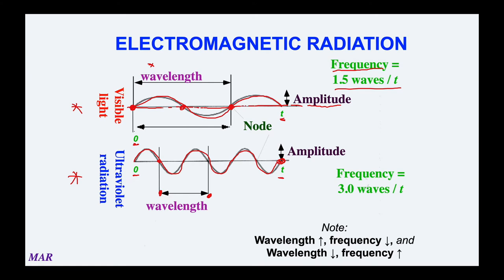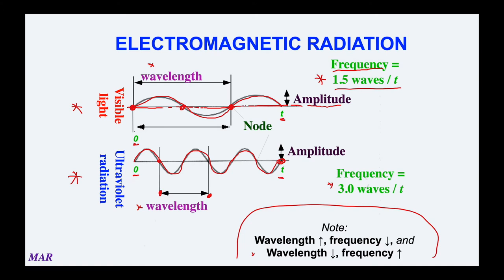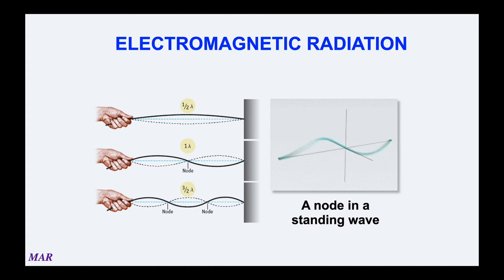As wavelength goes up, frequency goes down; as wavelength goes down, frequency goes up. Visible light has a longer wavelength but smaller frequency number, while ultraviolet has a smaller wavelength but larger frequency. There are different kinds of waves — moving waves like ocean waves, and standing waves. Most of what we'll talk about in chemistry is standing waves, like a rope connected to a wall that you rotate. Everything in chemistry is basically standing waves, and we'll see ways to relate electrons to them.